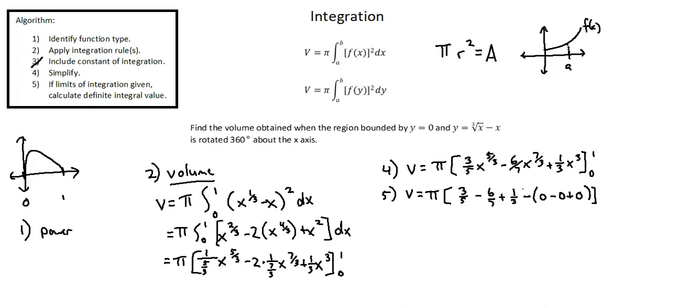And finally, combining our fractions and multiplying by pi. Volume equals eight over one hundred and five pi. And keeping in mind that we're calculating volume units cubed. So, the volume obtained when the given region is rotated 360 degrees about the x axis is eight over one hundred five pi units cubed. We've completed our requirements and this concludes volume example one.